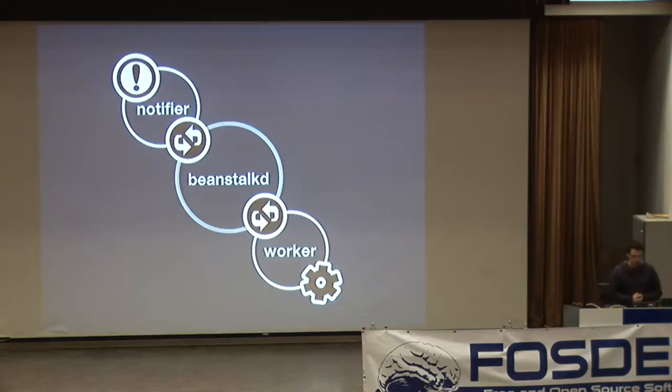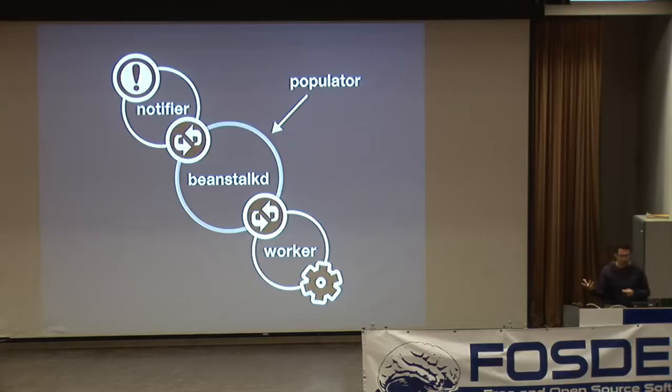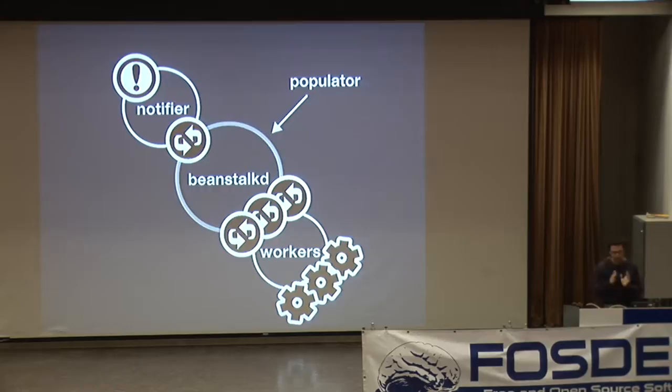Flapjack is a tool I've been writing for the last year or so, and it follows exactly the same principle. You have the workers which do the testing phase, the notifier which does the notifying phase, and BeanstalkD in the middle handling communication between all the different bits. For the pre-compilation I mentioned, there's a populator that gets data out of a database and injects it onto the Beanstalk, so a worker just needs to ask for the next check and Beanstalk makes it available.